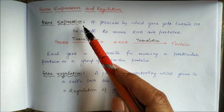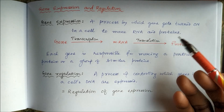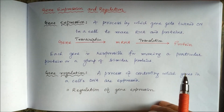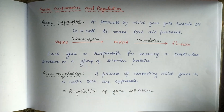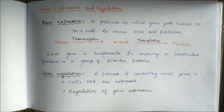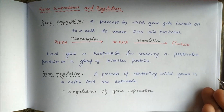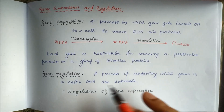When the gene is on, there will be gene expression and the cell will prepare its RNA and proteins. Each gene is responsible for making a particular protein or a group of similar proteins. Gene regulation is the process to control which genes will be expressed and which genes will be in the off position.